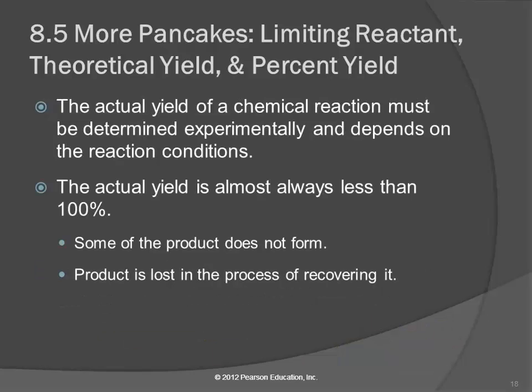The actual yield of a chemical reaction has to be determined experimentally — it's going to depend on the reaction conditions and can be different. You could give the same ingredients and recipe to three different people in three different kitchens and they may come up with three different actual yields. The actual yield can change from time to time and is not something you can just calculate.